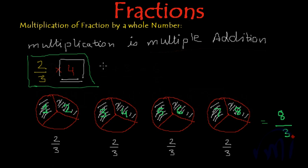And what does it actually mean? See, we had a fraction 2 by 3, and when we were multiplying it by 4, we are actually multiplying the whole number only to the numerator of the fraction.